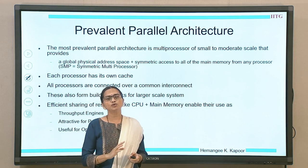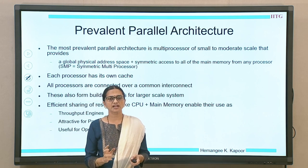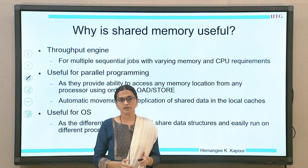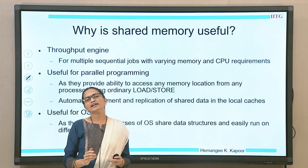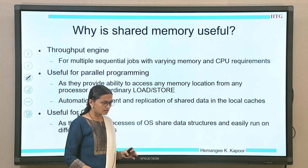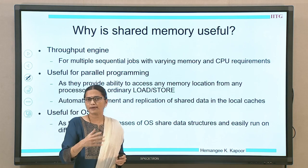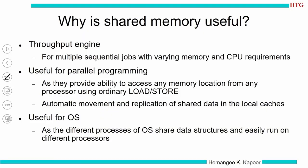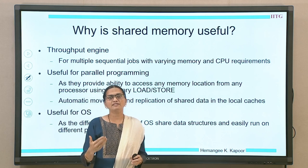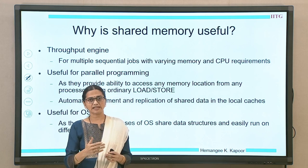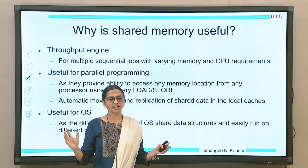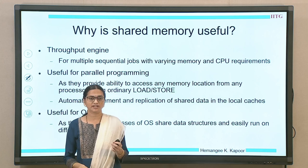How are we going to use such a system? As a throughput engine — it is very good for parallel programming and also for operating systems. We have several computer systems connected, so different programs can run on them. Small programs can run on multiple processors and complete very fast in parallel, essentially increasing the throughput of the system. Hence such a symmetric multiprocessor can be used as a throughput engine.